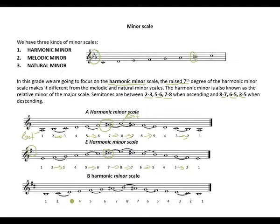The same goes for the B harmonic minor scale. We find our 1st semitone between the 2nd going to the 3rd, 5th going to the 6th, and the 7th going to the 8th. We have our raised 7th degree. When descending, we also indicate the raised 7th degree again with an accidental. Another semitone between the 6th and the 5th, and 3rd going to the 2nd. That's the harmonic minor scale — it consists of 3 semitones and has a raised 7th degree to form a leading note.